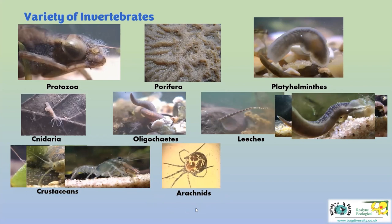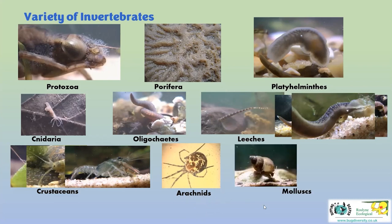The arachnid we find mostly in our samples is the freshwater mite - really tiny, like a pinhead with legs. But under a microscope there's an enormous variety of patterning and colours on them. Some of the bigger ones are actually really bright red, and these are predators hunting around for small creatures that they can stab and suck the insides out of.